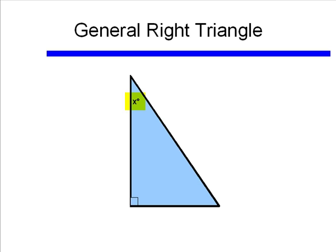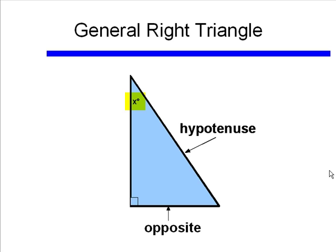What happens if we look at the other acute angle in this triangle? I've moved x from the first angle to the second acute angle. Well, the hypotenuse is still the same — still the longest side, the side opposite the 90 degree angle. But now my opposite leg, which is across from my new angle x, is what used to be the adjacent side. And the adjacent side of this new angle x is now the longer leg. So the opposite and adjacent sides depend on which acute angle we're looking at. The hypotenuse is always the same — always the longest side, always the one opposite the 90 degree angle.